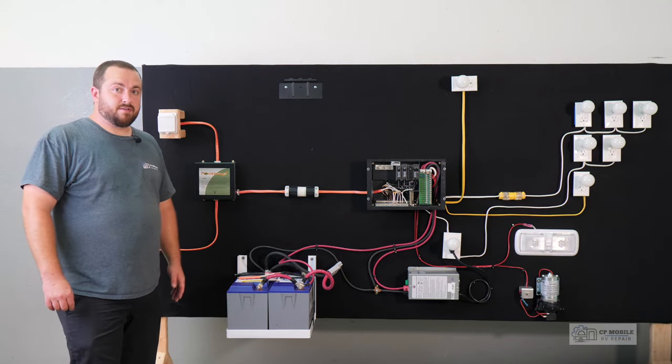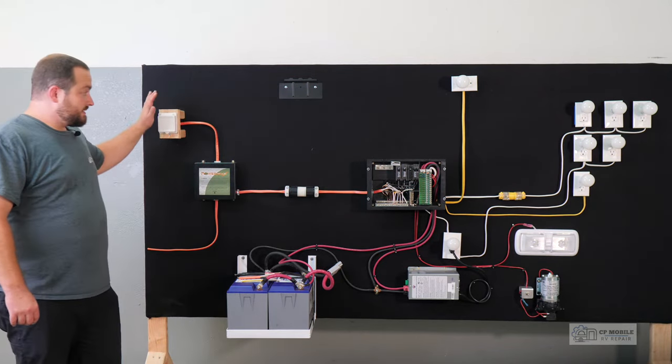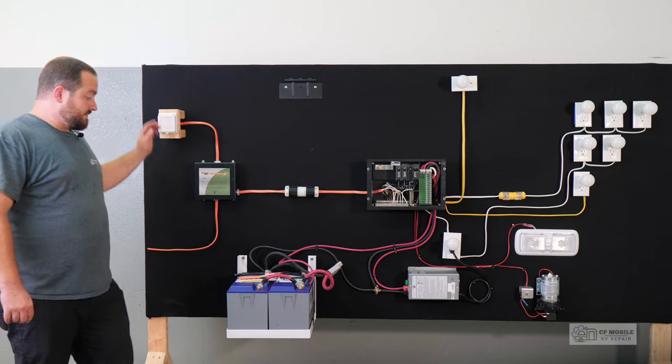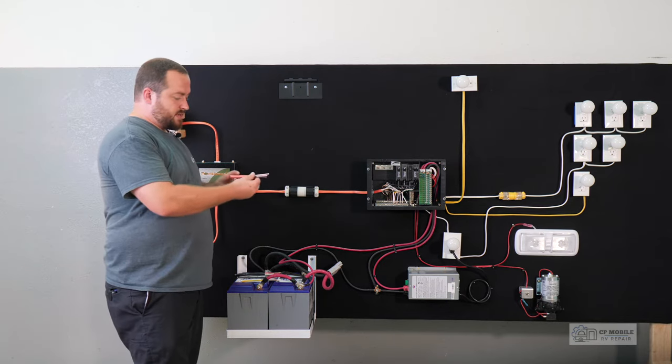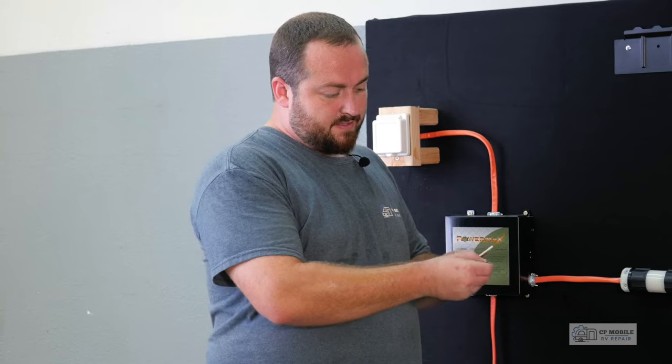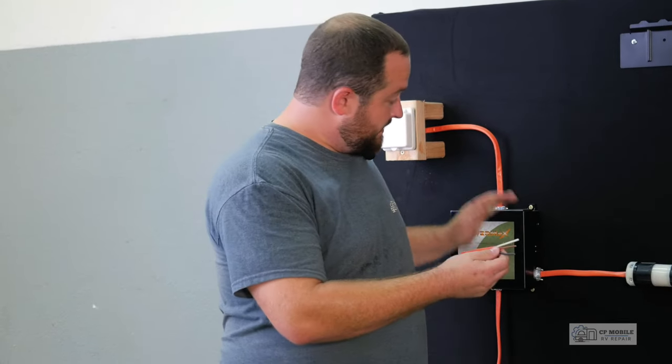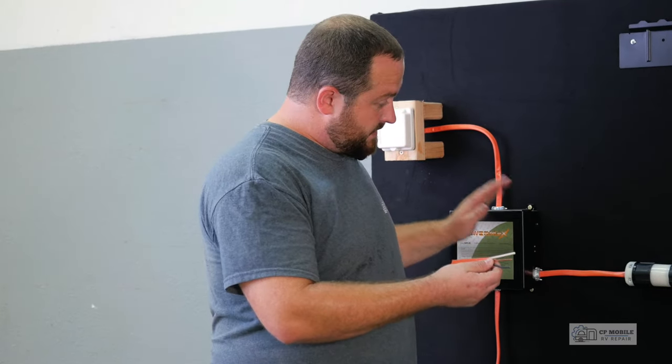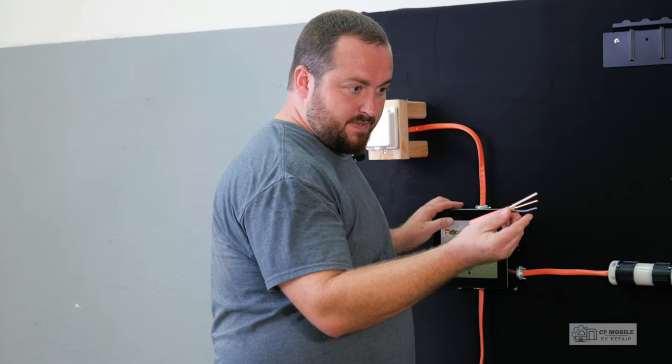Okay now for the 120 volt portion. This system is wired as a 30 amp service so we use this wire which has an orange insulation on it and has three wires inside. Everywhere in this 120 volt system you see this orange wire.